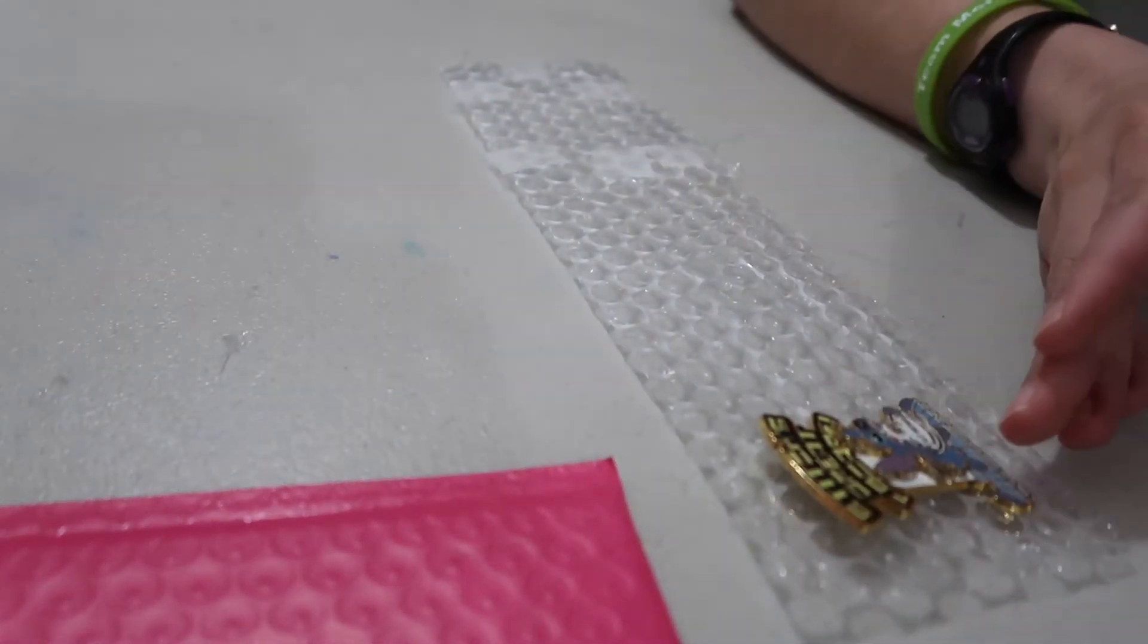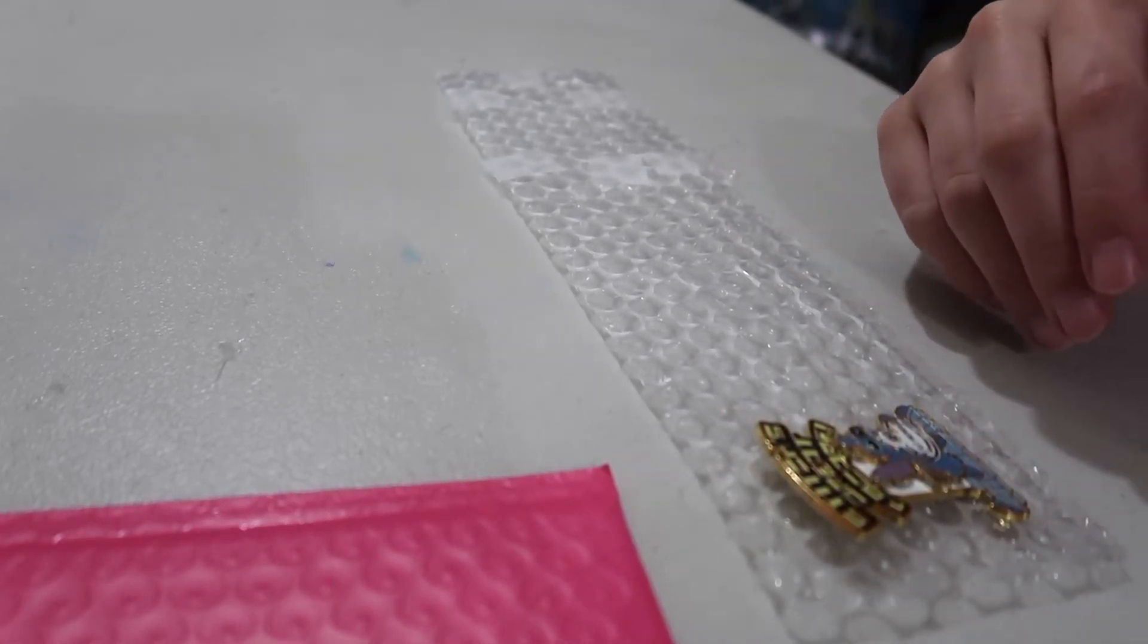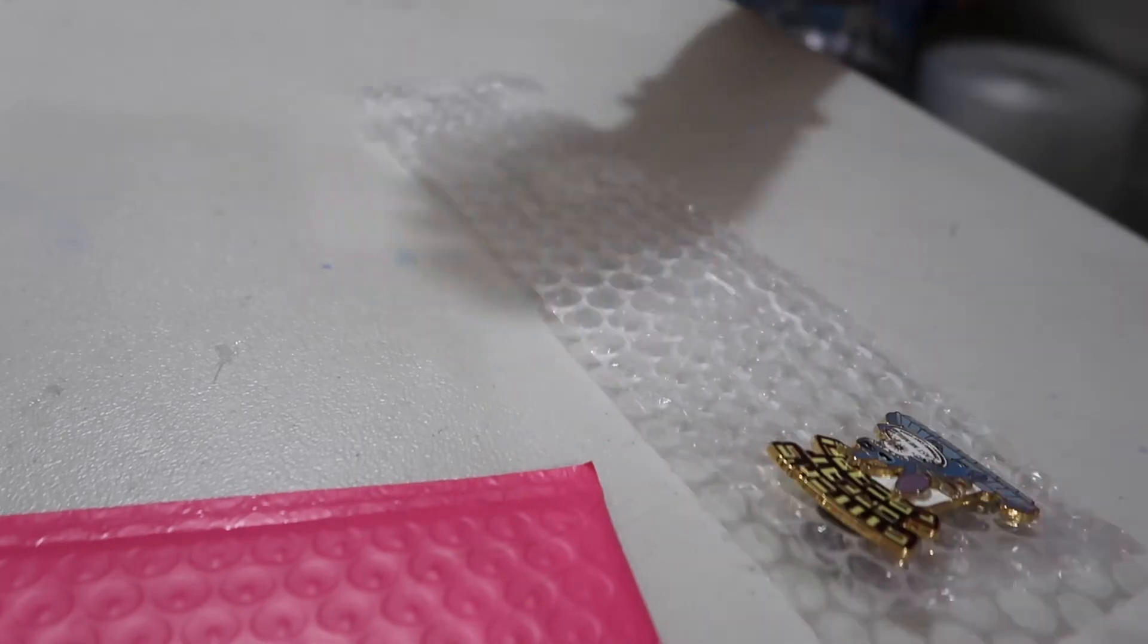So I'm taking my pin and I like to stick it through the bubble wrap and then take a pin back for it and stick it on the other side. So I'm just going to take the pin back and stick that through the other side so that the post is through the bubble wrap keeping it nice and secure.